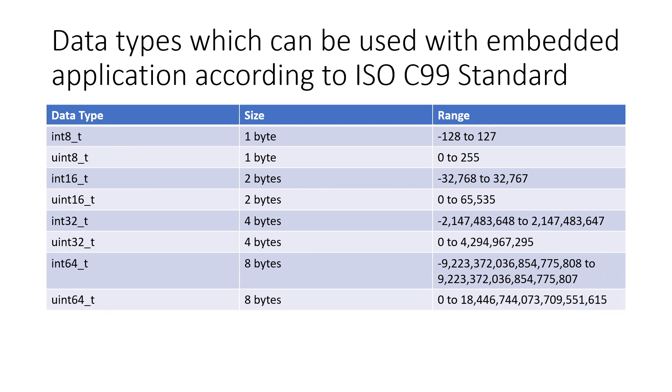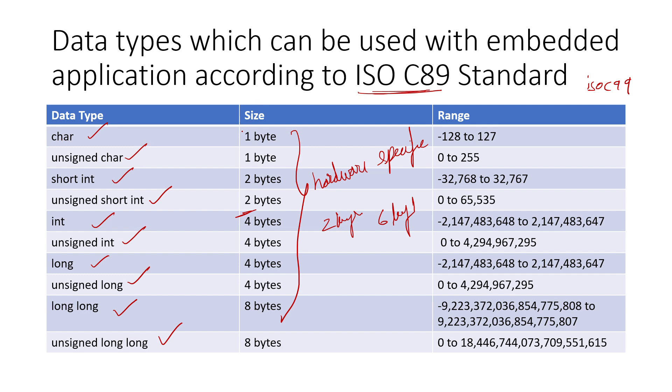Moving forward, we have ISO C99. This is the standard which most of you are not aware of, but this is what industry experts or industry-level embedded programmers use. This is the standard we all must focus on.